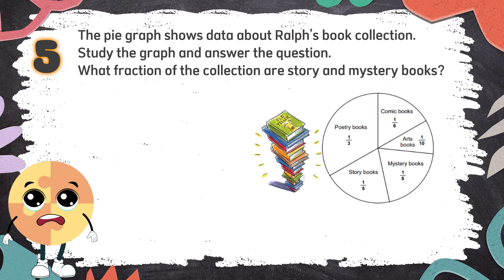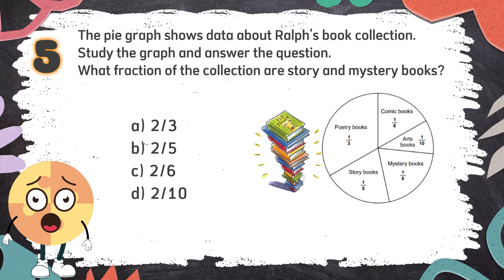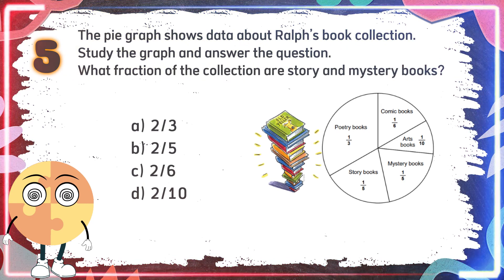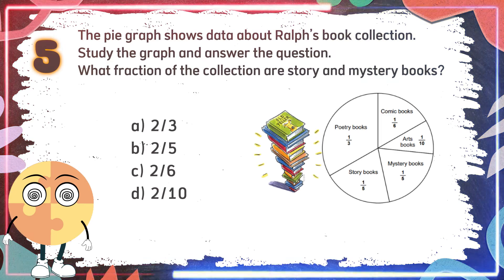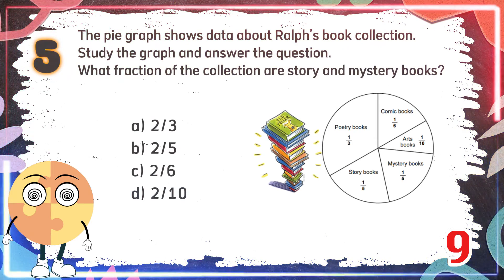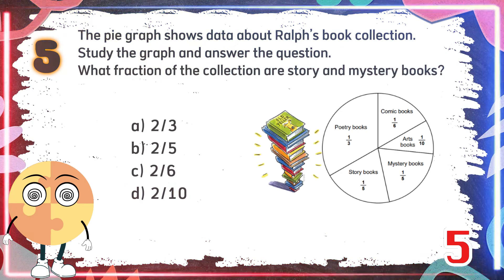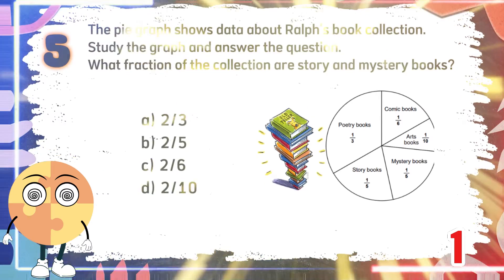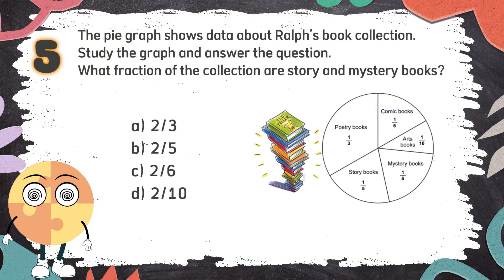Number 5. The pie graph shows data about Ralph's book collection. Study the graph and answer the question: What fraction of the collection are story and mystery books? The choices are A. 2 thirds, B. 2 fifths, C. 2 sixths, D. 2 tenths. The correct answer is B. 2 fifths.